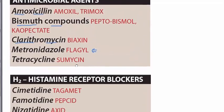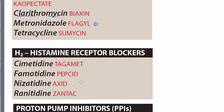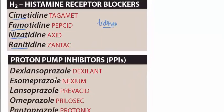Then we have histamine H2 receptor blockers, which are the '-tidines.' In the tidines we have cimetidine, famotidine, nizatidine, and ranitidine. These are the histamine H2 receptor blockers.